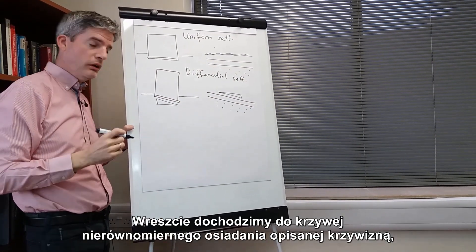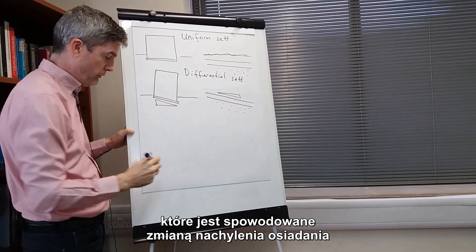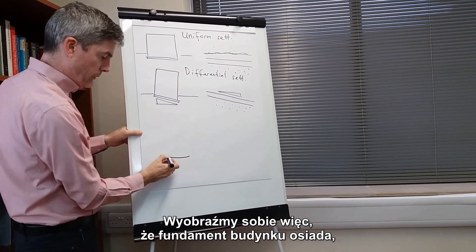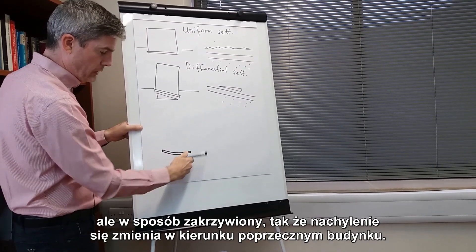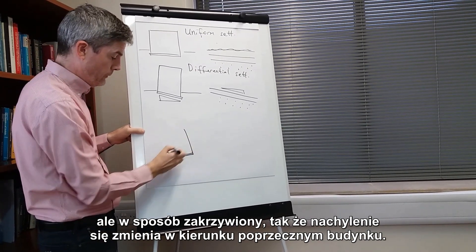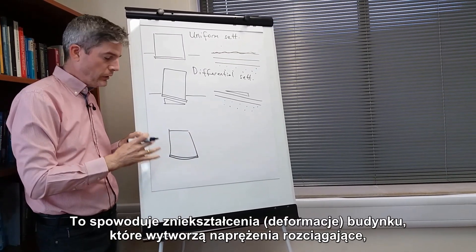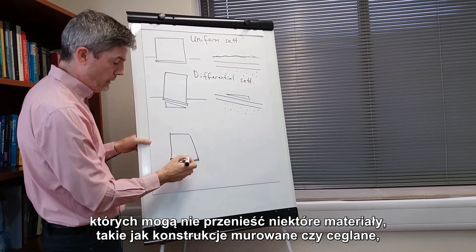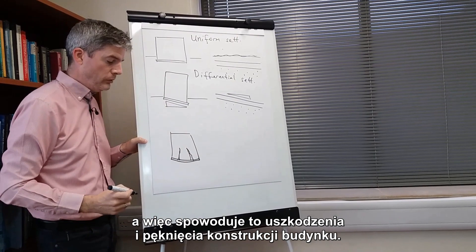Finally, we come to curvature, which is caused by a change in the slope of settlement. So let's imagine that the building foundation settles in a curved way so that the slope is changing as we go across the building. That's going to cause distortions in the building that create tensile strains that cannot be sustained by certain materials such as masonry and brickwork. So that is going to cause the damage and the cracks in the building.